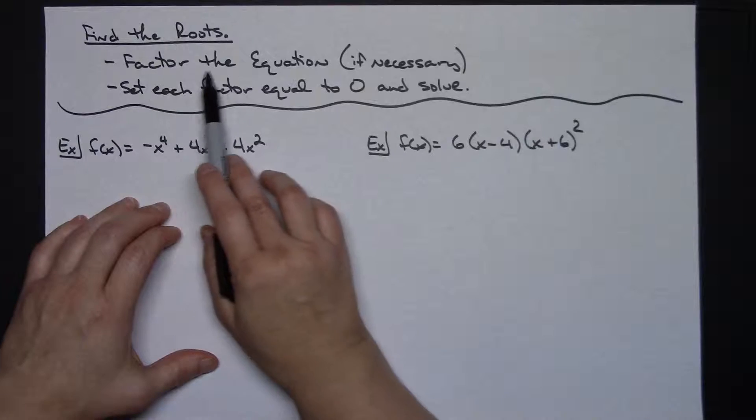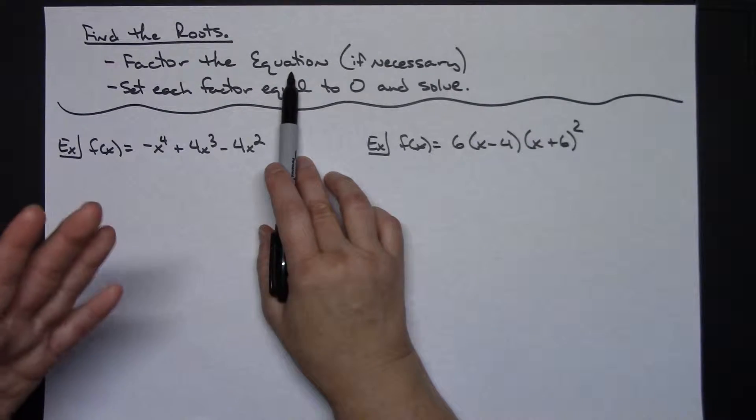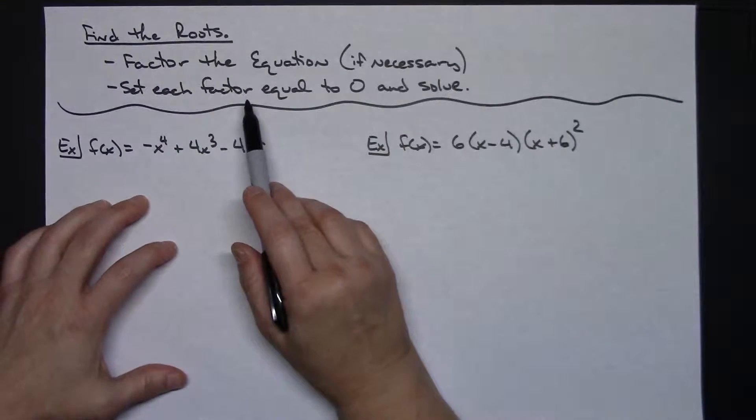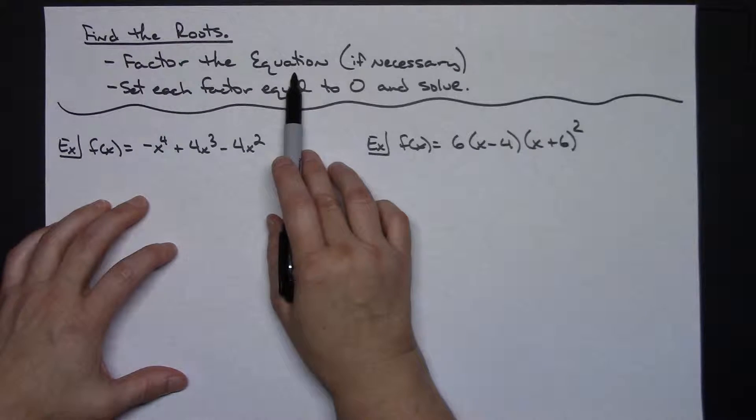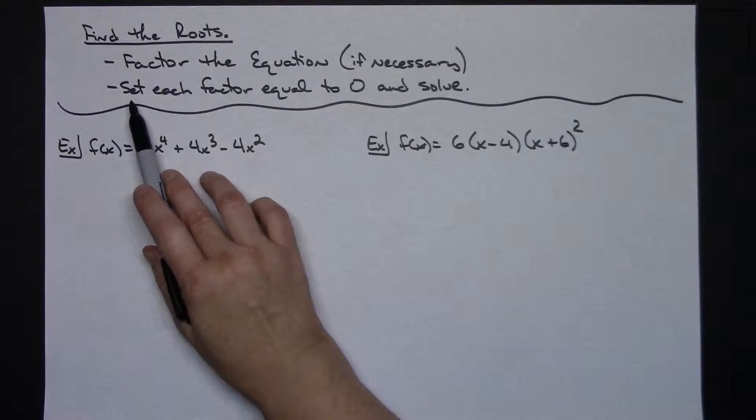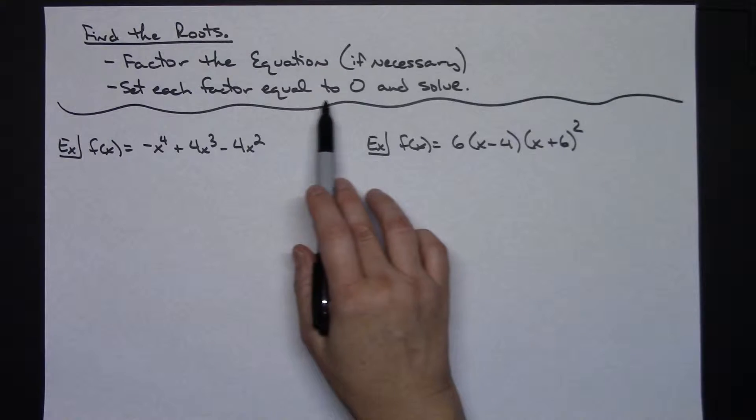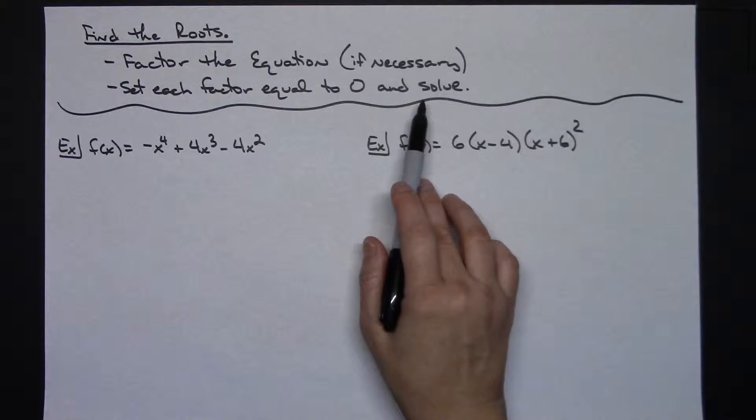If you're trying to find your roots, you're going to factor the equation if necessary. If it's already in factored form you wouldn't need to do that. But generally the first step is going to be to factor that equation, and then you're going to set each factor equal to zero and then solve.